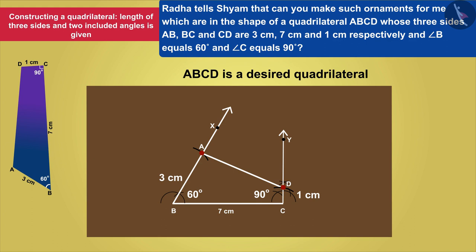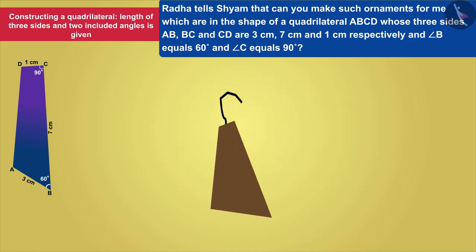Now, he cuts that cardboard in this shape and prepares jewelry for Radha, which looks something like this.